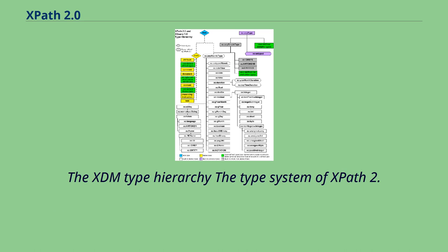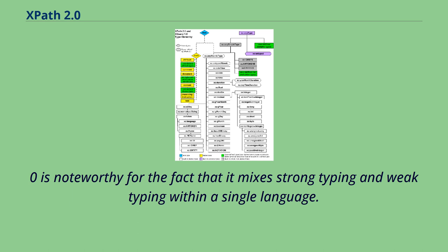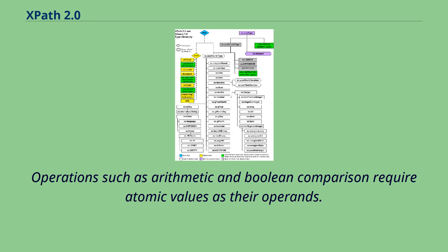The XDM type hierarchy, the type system of XPath 2.0, is noteworthy for the fact that it mixes strong typing and weak typing within a single language.